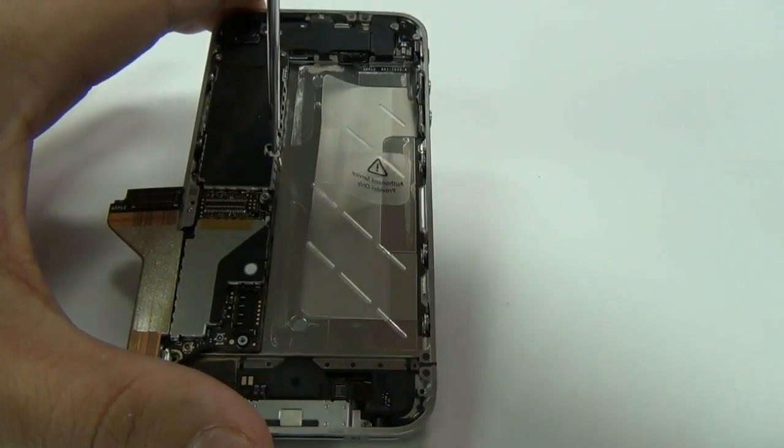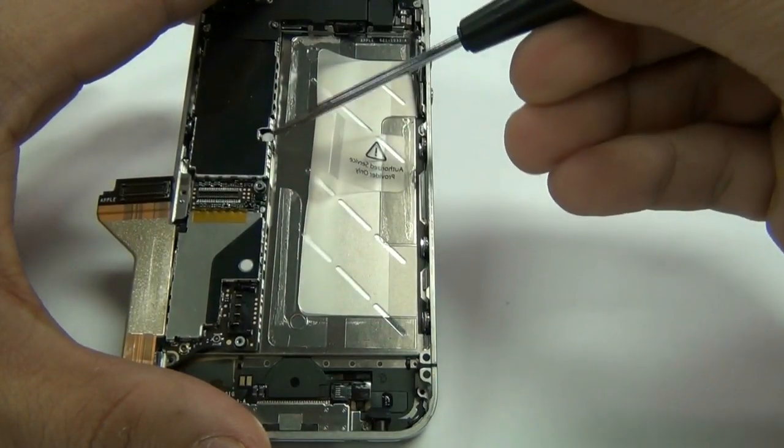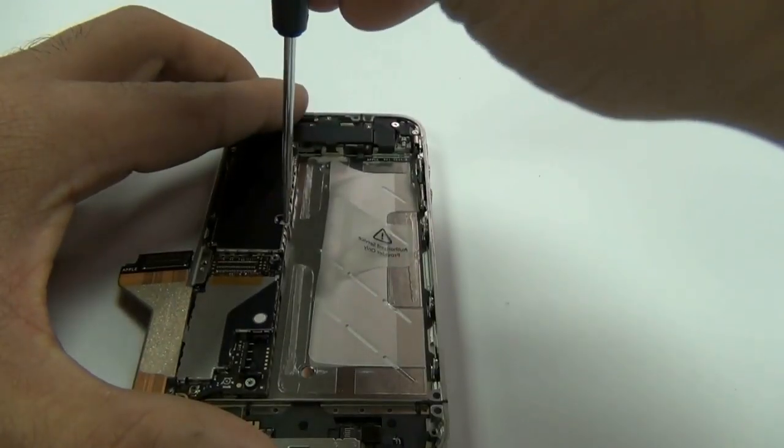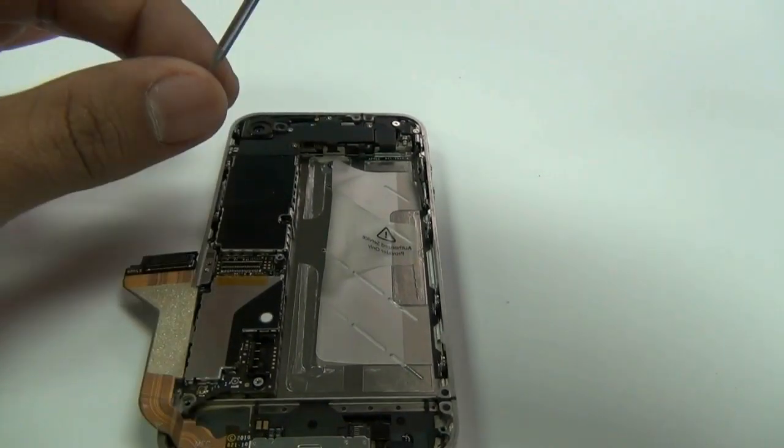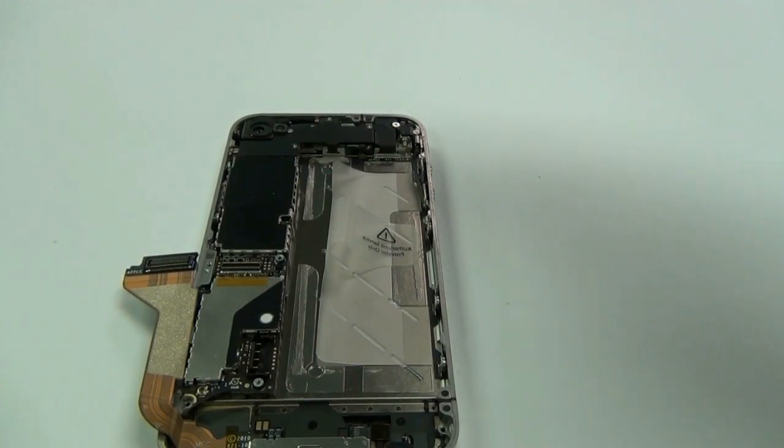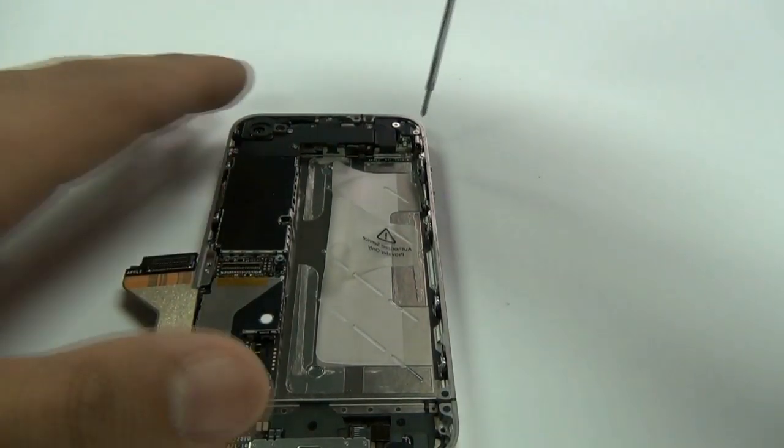Now, you can remove the screw in the center of your logic board. Please note it is covered by a white warranty sticker. You can screw over this or pull it off carefully if you want to put that sticker back on when reassembling your phone.